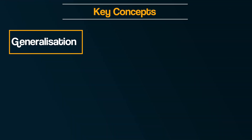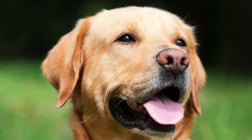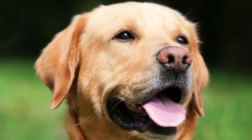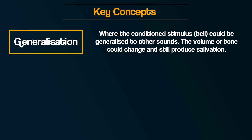We can develop our understanding of classical conditioning further by looking at what Pavlov also noted from his research with the dogs. Firstly, there is generalisation. This is where the conditioned stimulus — the bell — could be generalised to other sounds; the volume or tone could change and still produce salivation. For example, when the dogs hear other sounds like a doorbell ringing, the dog might also salivate. The sound isn't exactly the same, but it's similar enough to produce the same response.